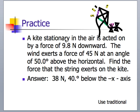It's acted on by a force of 9.8 newtons down. The wind exerts a force of 45 newtons at an angle of 50 degrees above the horizontal. We are supposed to find the force that the string would exert on the kite to keep it stationary.